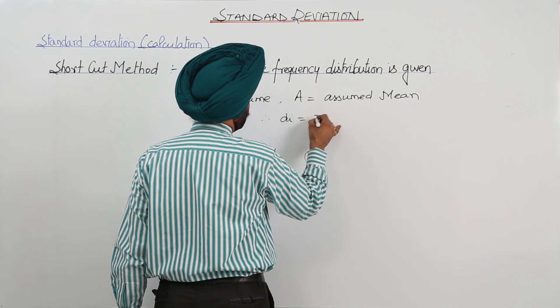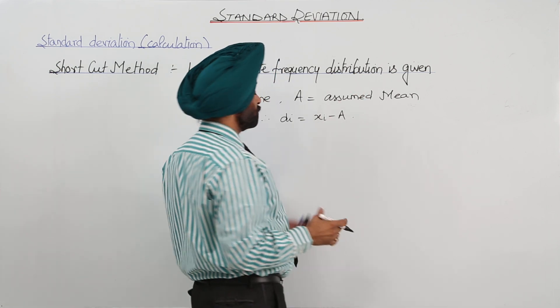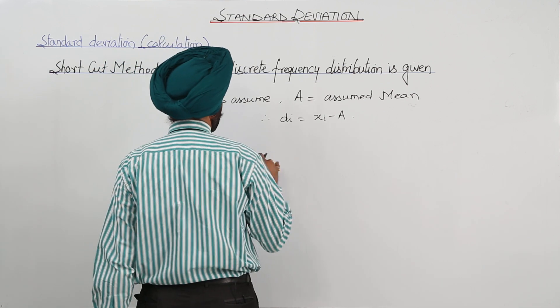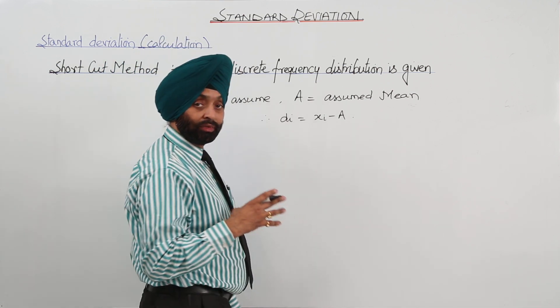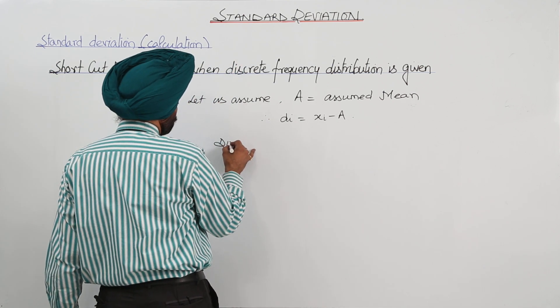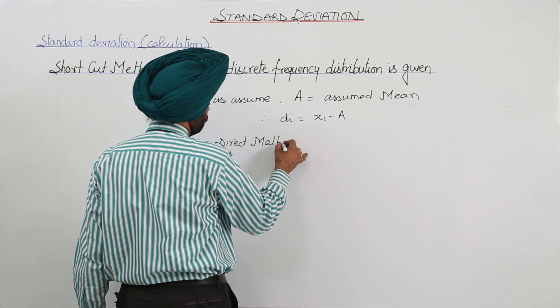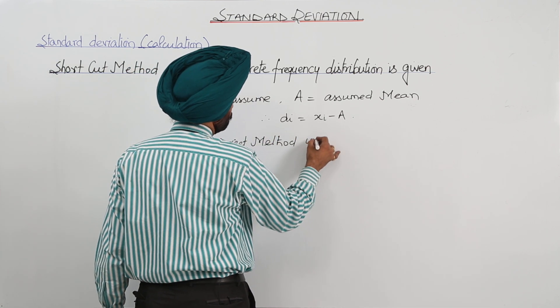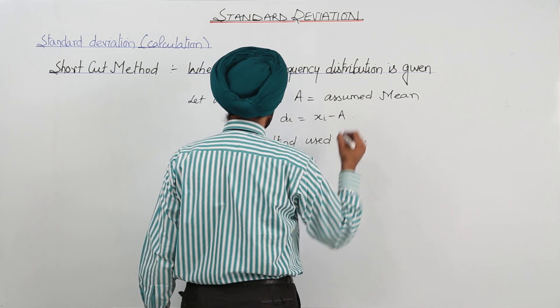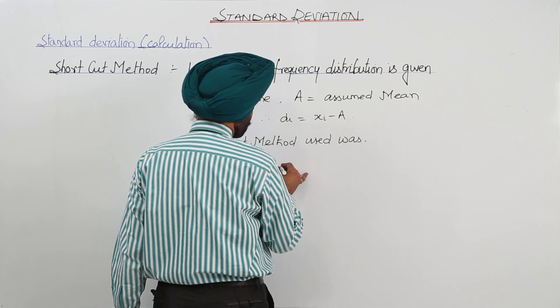DI now we can take it XI minus A just to make more easy calculation part, and we are also going to save the time for it. Direct method used for what? Used for evaluating the standard deviation. So we use the direct method.